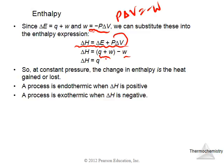That means change in enthalpy is nothing but the heat added to the system. Keep this in mind: when a process is endothermic, delta H is positive. When a process is exothermic, delta H is negative.